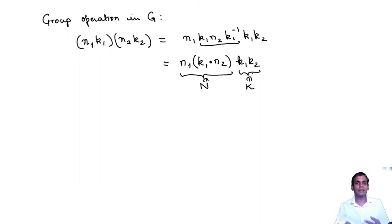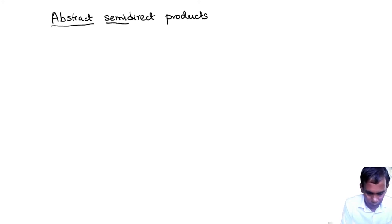Now what we can do is we can turn these observations around to give a new way of constructing groups and these are called abstract semi-direct products. So in this, let's just start with, now we don't have a group G to start with. But what we have is two groups N and K.